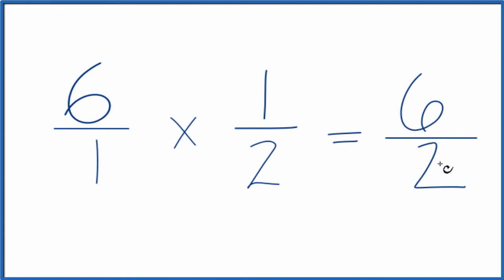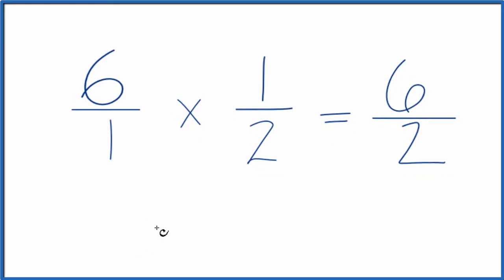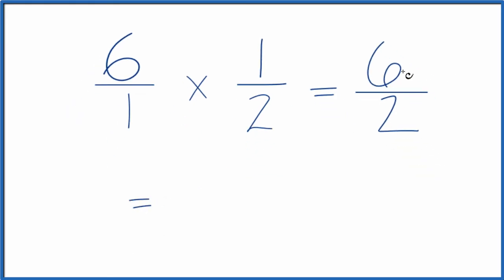But we can simplify this. These are both even numbers. So if we divide two into six and into two, six divided by two is three. Two divided by two is one. And that's just three over one. That's just three.